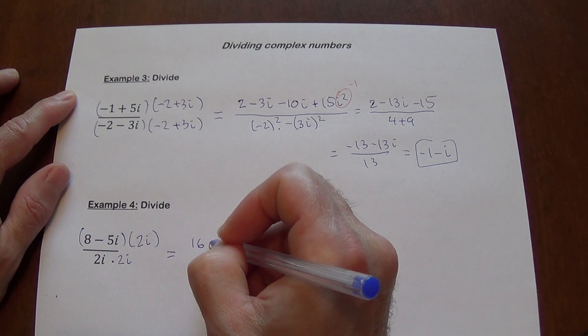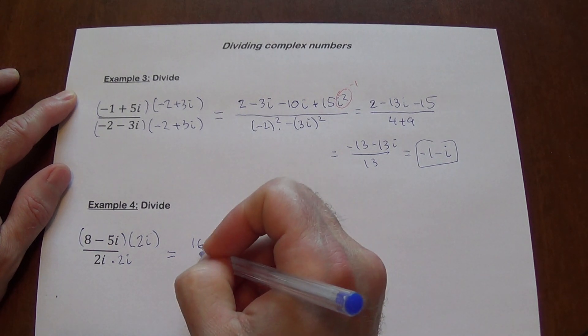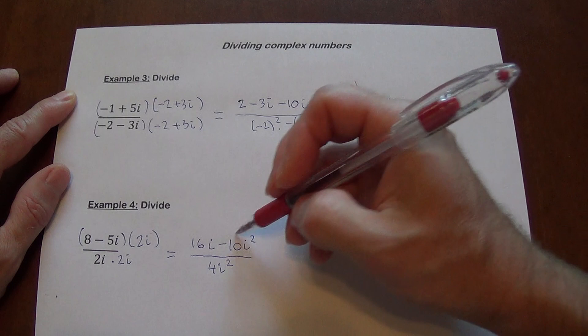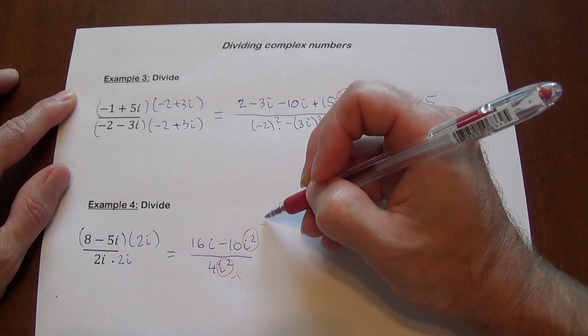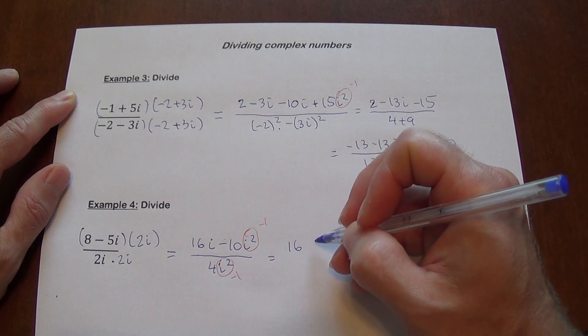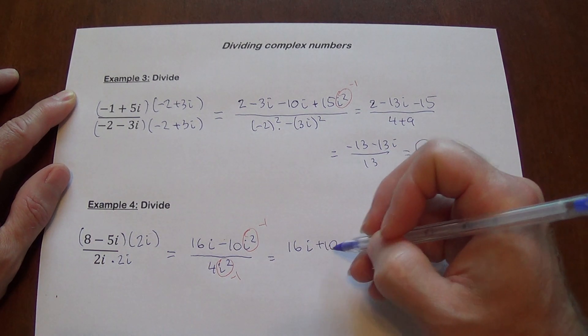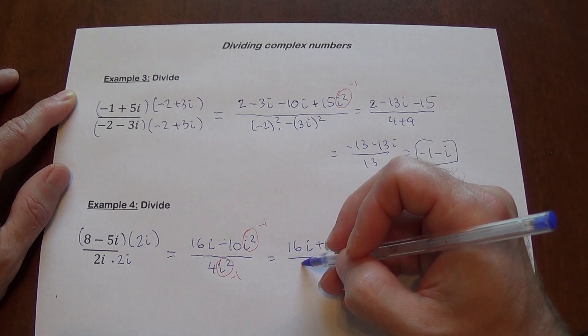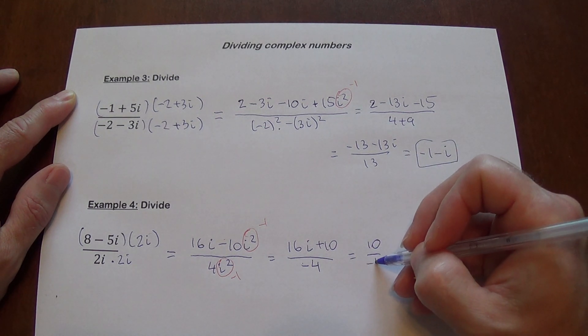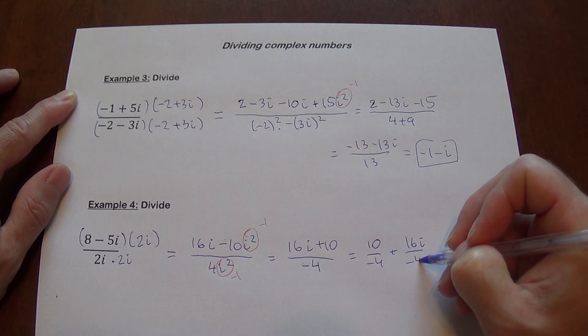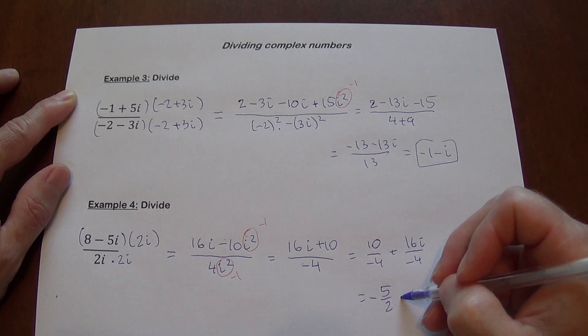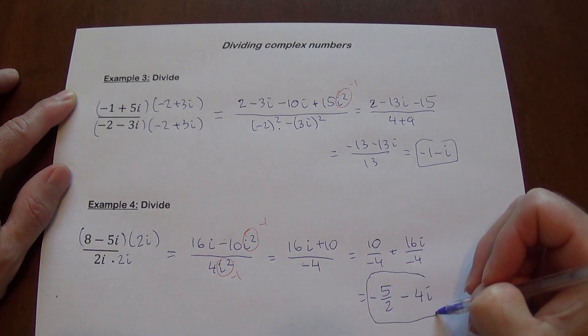This is going to give us 16i minus 10i squared all over 4i squared. We do remember that i squared is negative 1. So this gives you negative 1 here, negative 1 there. And what do we have? We have 16i plus 10 over negative 4. We do need to put it in standard form, so it's 10 over negative 4 plus 16i over negative 4, which will give us, all in all, this simplifies to negative 5 halves minus 4i. This is our answer.